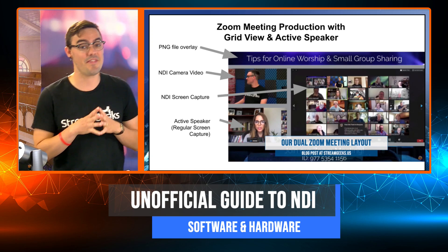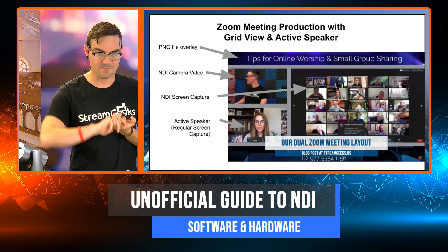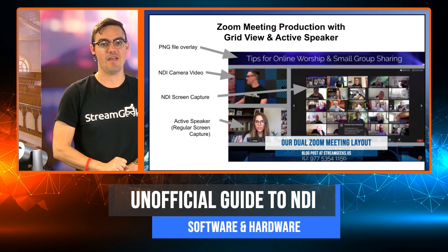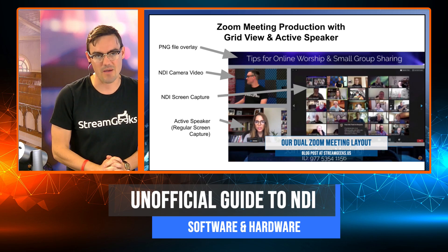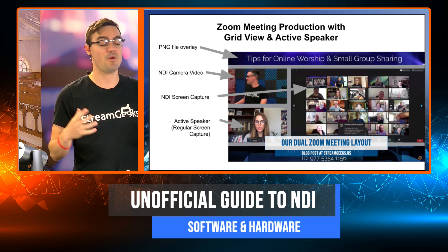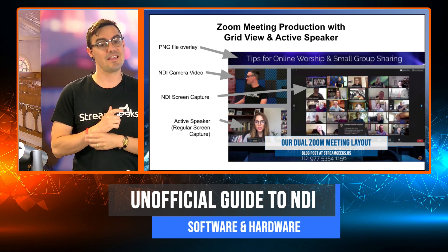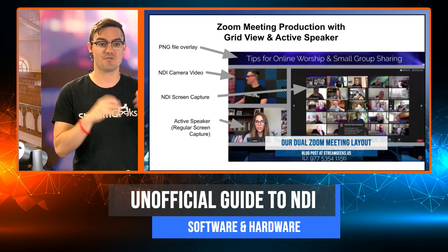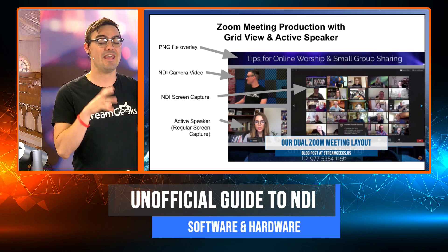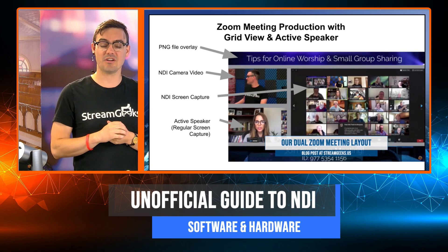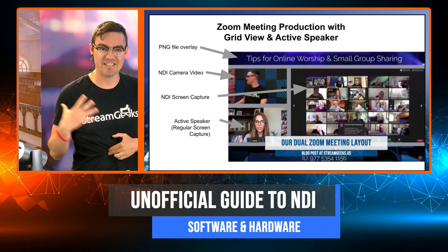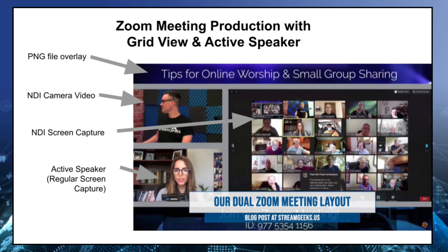Taking this another step further — one I get a lot of questions about — imagine capturing two NDI sources of the exact same Zoom meeting. We've got three boxes: an NDI camera showing the host, an NDI screen capture for the Zoom meeting on one computer showing it in active speaker mode, and then another computer on the local area network using NDI screen capture capturing the grid view. This way, as a producer, you can always show the active speaker in full screen, or in their own dedicated space.